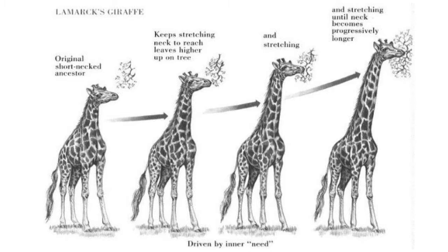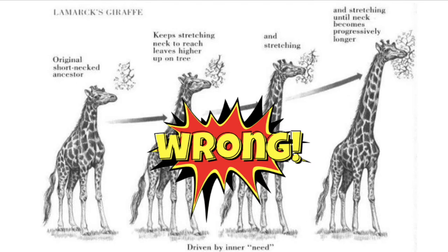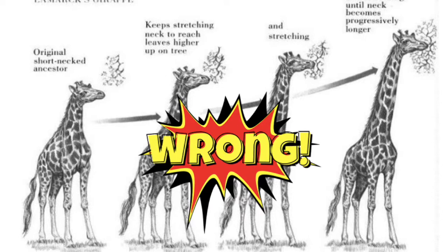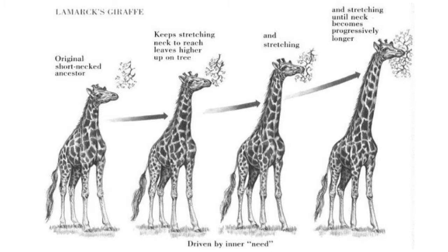Lamarck had the idea that physical changes an organism acquires during their lifetime — like developing a body part through increased use — could be transmitted to their offspring. This idea of evolution via acquired characteristics influenced evolutionary thought for much of the 19th century. An understanding of genetics and heredity disproves this theory, because changes acquired during a lifetime cannot be passed on to offspring. However, the point remains that the idea of evolution had been around for a while.